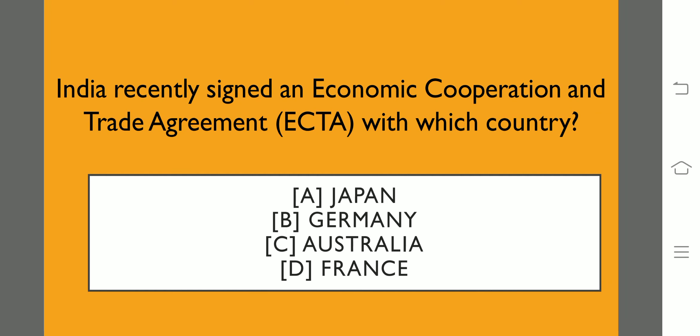India recently signed an Economic Cooperation and Trade Agreement, ECTA, with which country? India has signed an Economic Cooperation and Trade Agreement with Australia. This new agreement is called ECTA.